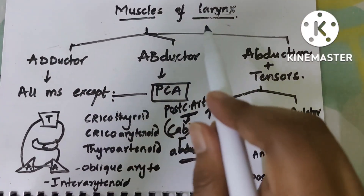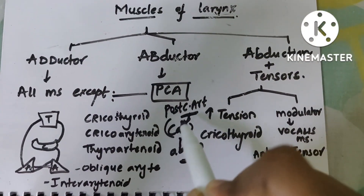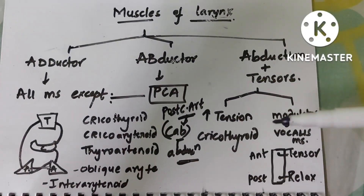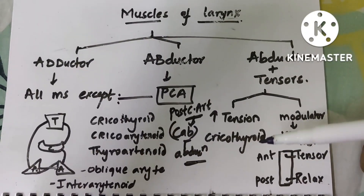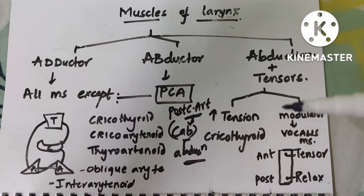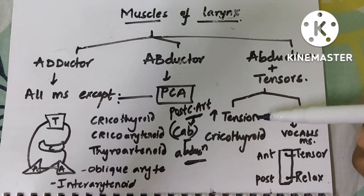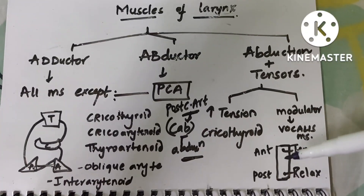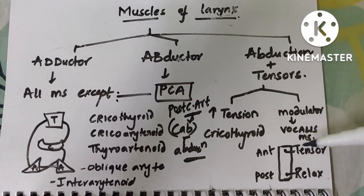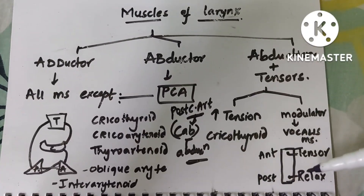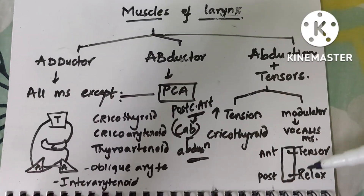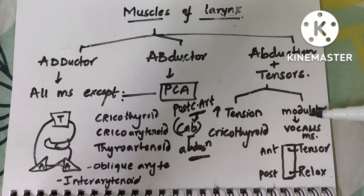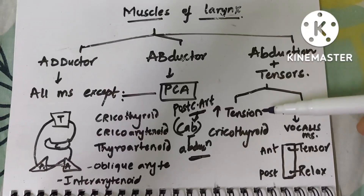These are all the adductors of the larynx, whereas the posterior cricoarytenoid is the only abductor. Cricothyroid is the only tensor of the larynx — it is the most important muscle to increase the pitch of the voice and the tension of the vocal cords. The modulator of the larynx is the vocalis muscle, because its anterior part acts as a tensor and its posterior part acts as a relaxer.